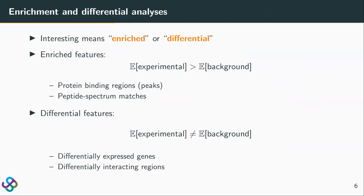What are interesting features? It may mean enriched or differential. By enriched, the features have higher measurements in the experimental condition than the background condition — for example, in peak calling analysis and peptide identification analysis, we look for enriched features. By differential, the features have different measurements under the two conditions, as is the case for identification of differentially expressed genes and differentially interacting regions.